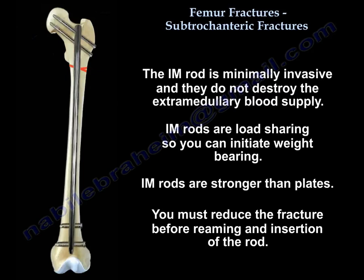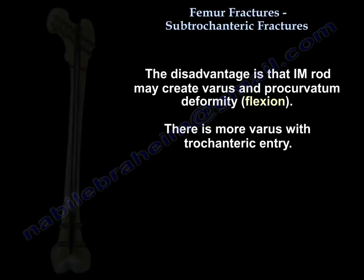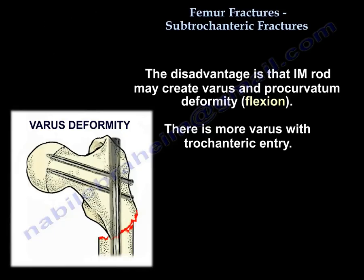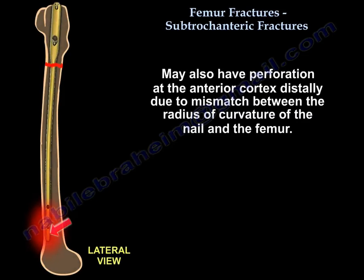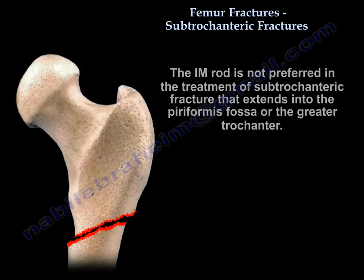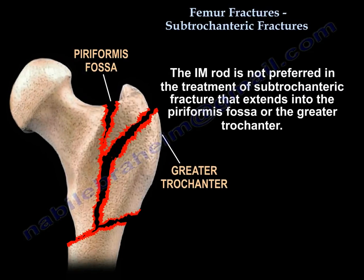You must reduce the fracture before reaming and insertion of the rod. The disadvantages include the potential to create varus and procurvatum deformity — which is a flexion deformity — with more varus when there is trochanteric involvement. There may also be perforation of the anterior cortex distally due to a mismatch between the radius of curvature of the nail and the femur. The rod is not preferred when the fracture extends into the piriformis fossa or greater trochanter.